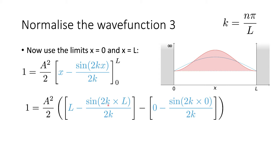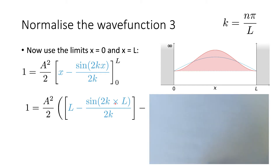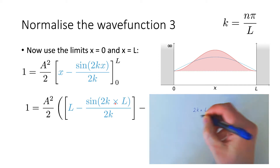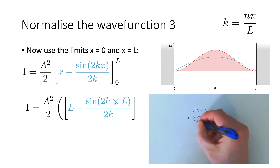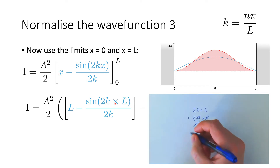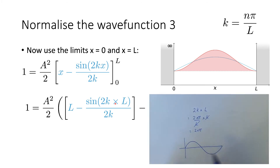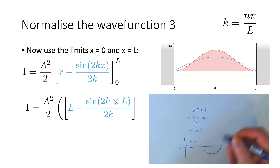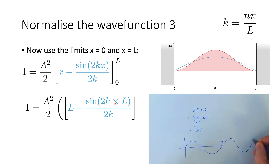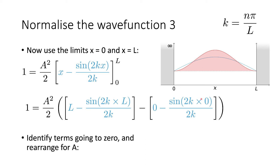For the upper limit, we evaluate 2k times L. Since k = nπ/L, we get 2k · L = 2nπ/L · L, and the L's cancel, giving 2nπ. Since n is a quantum number — an integer — we have multiples of 2π. The sine of 2π, 4π, and so on all equal 0, so this sine term also goes to 0. Identifying all the terms going to 0, we end up with 1 = A² / 2 times L.